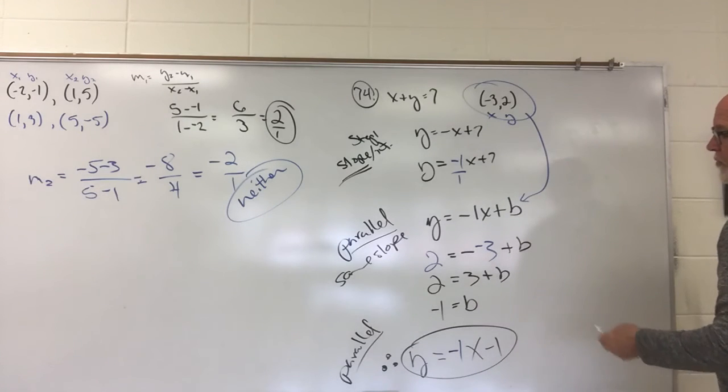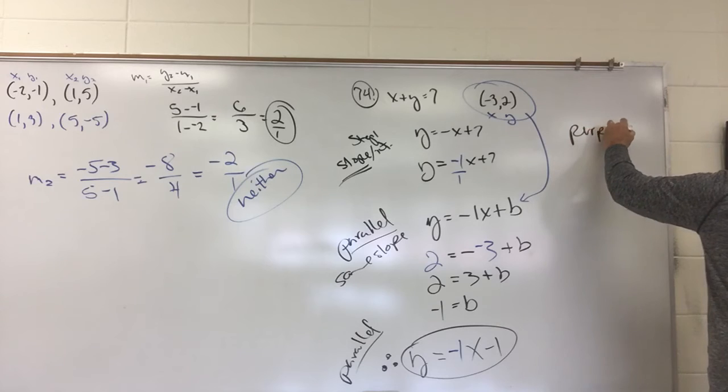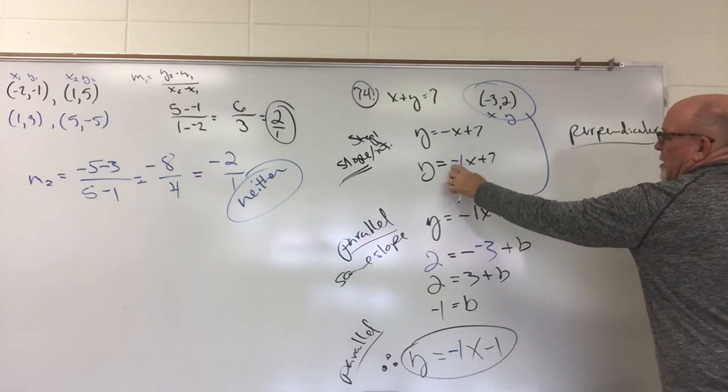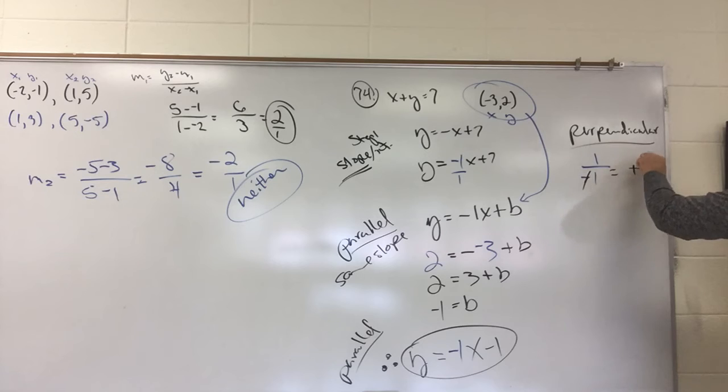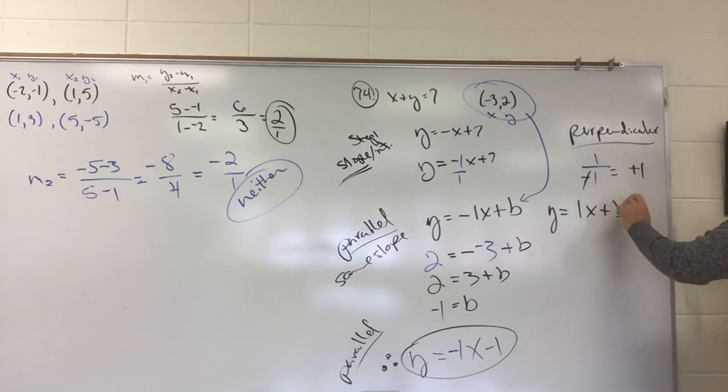Now, we're asked to do the same thing for perpendicular. Perpendicular. That means the slope is going to have to be turned upside down. So, it is 1 over a negative 1. Then, the sign has to change. So, the sign is going to be positive 1. So, this is going to be the line that's going to be perpendicular. So, y equals positive 1x plus b. It's got to go through the exact same point.